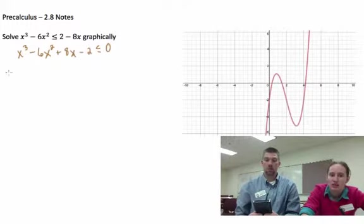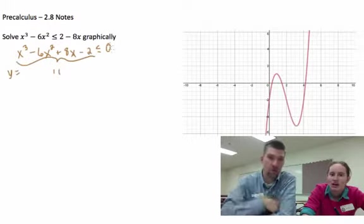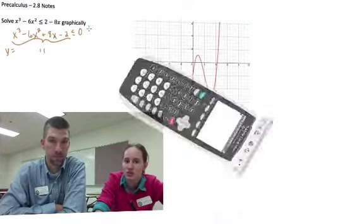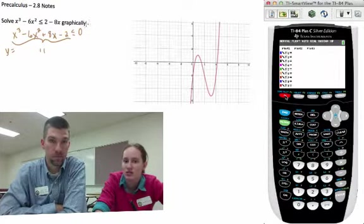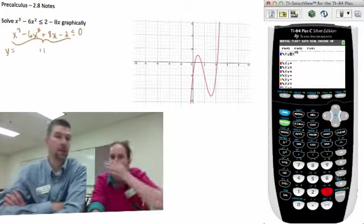So we put in y equals this. That's what I got, the graph that we're showing. And what we want is less than or equal to 0, so we want all of the places where our graph is below the x-axis or touching the x-axis.